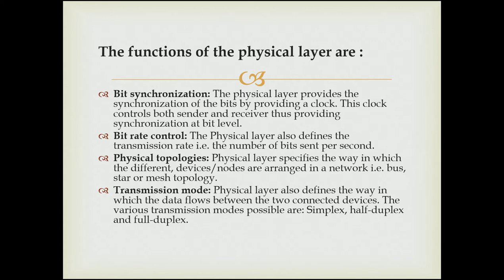Bit rate control: the Physical layer also defines the transmission rate, i.e., the number of bits sent per second. Physical topology: the Physical layer specifies the way in which different device nodes are arranged in a network. Transmission mode: the Physical layer also defines the way in which data flows between the two connected devices.